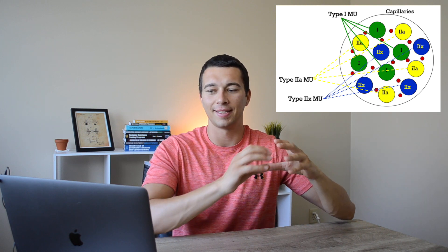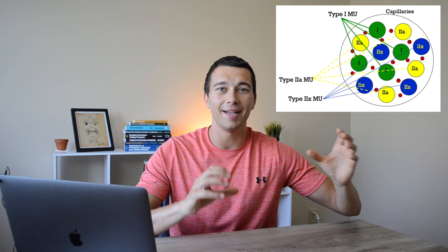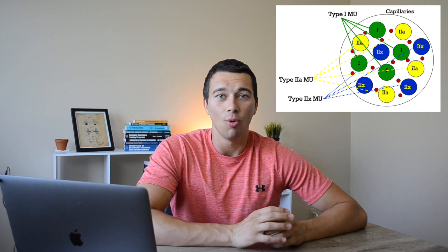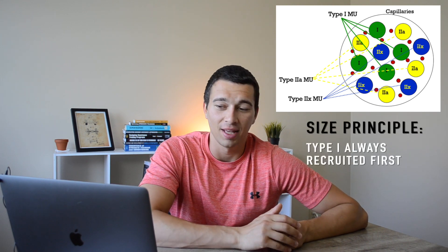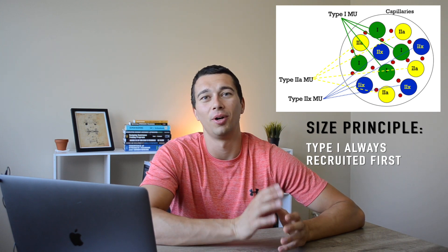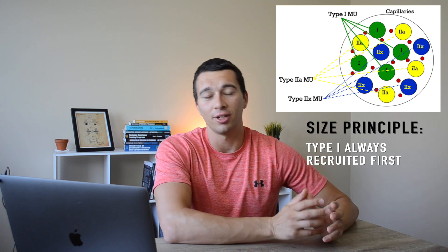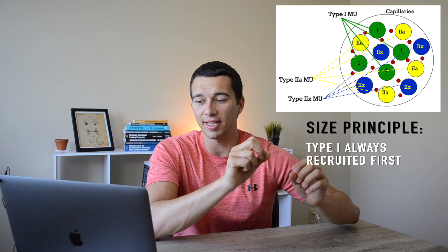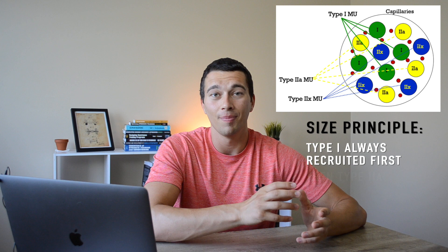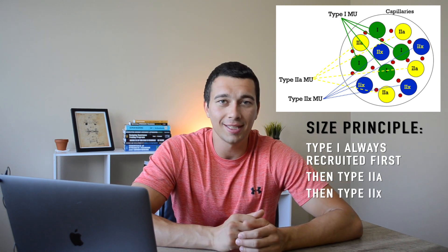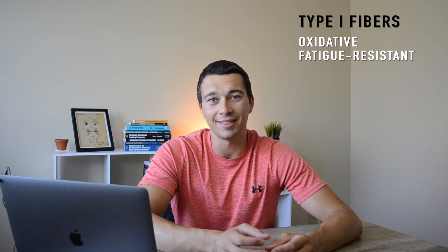The overall muscle has some combination of type 1's, type 2a's, and type 2x's in what we call a mosaic distribution. Importantly, when we're activating our muscle we always recruit our type 1's first — this is called the size principle. We activate the type 1 motor units first, and if that's not enough force, we move to type 2a fibers, and if needed, all the way up to type 2x's. Our body does this because type 1 fibers are very oxidative and fatigue resistant.